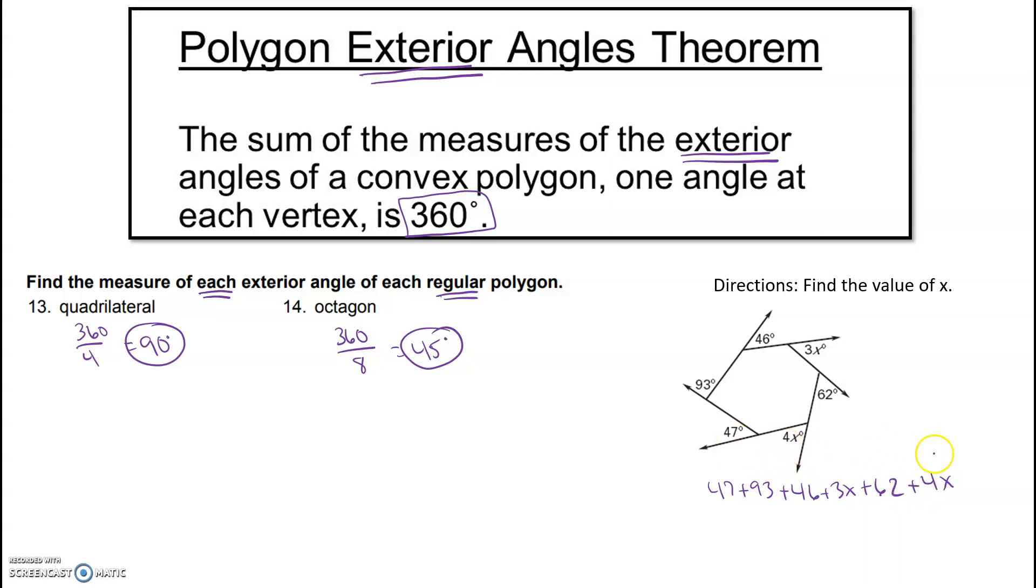Did I get all of them? Yeah, has to equal 360 because they're all exterior. Lots of like terms here: 4x's and 3x's is 7x. We got 47, 93, 46, 62. Let's add all those up. 47 plus 93 plus 46 and 62, so we got 248 over here, combining like terms.